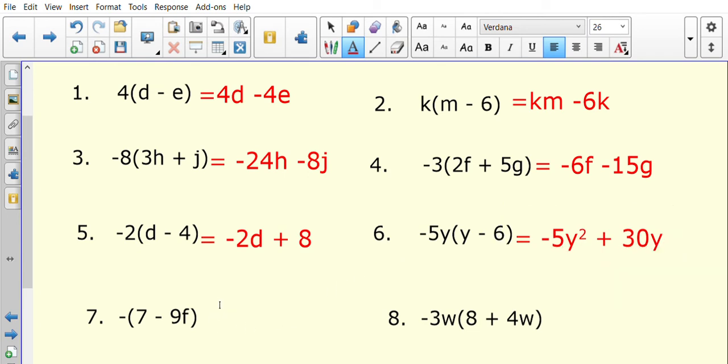Question number seven. Negative times the bracket, so that's the same as negative 1 times the bracket. So negative 1 times 7 will be negative 7. And then negative 1 times negative 9f will give me plus 9f.